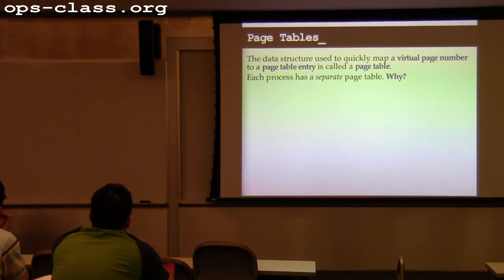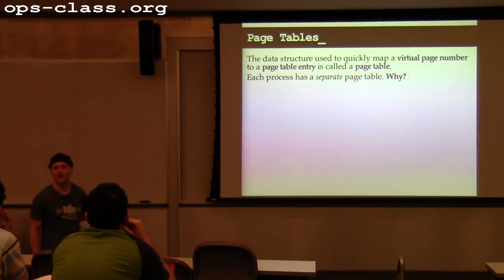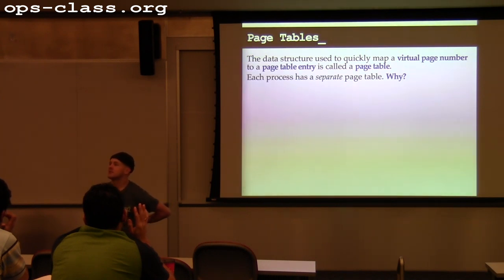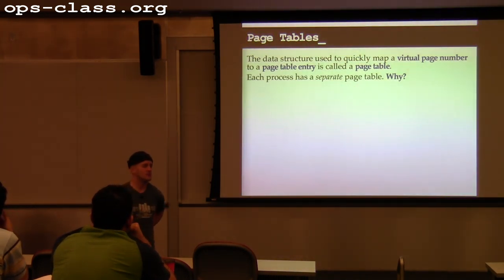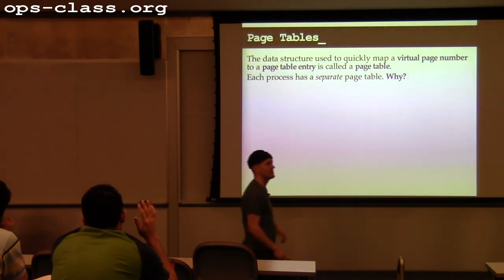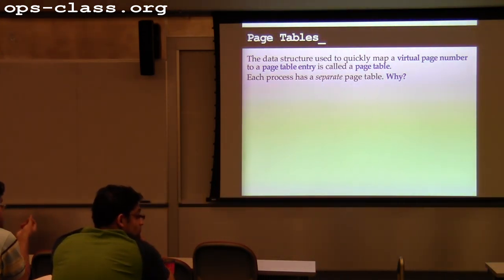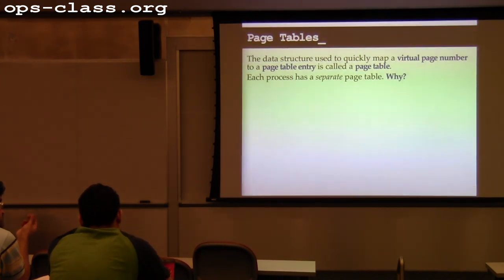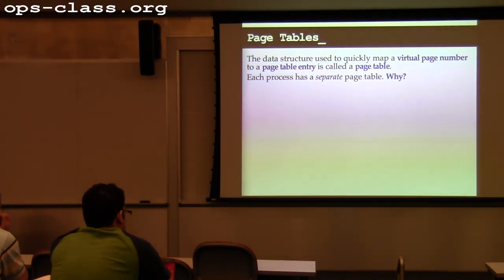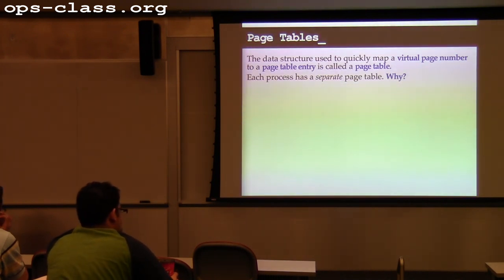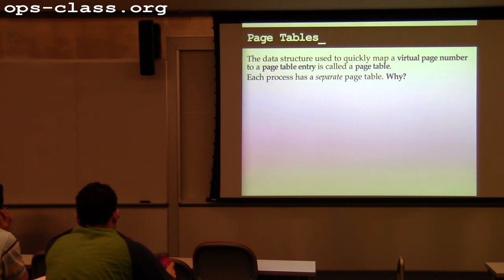Why does every process have a separate page table? Because some processes would have a virtual address that maps to a different physical address. Virtual addresses are inherently per-process — a virtual address has no meaning without associating it with the process.